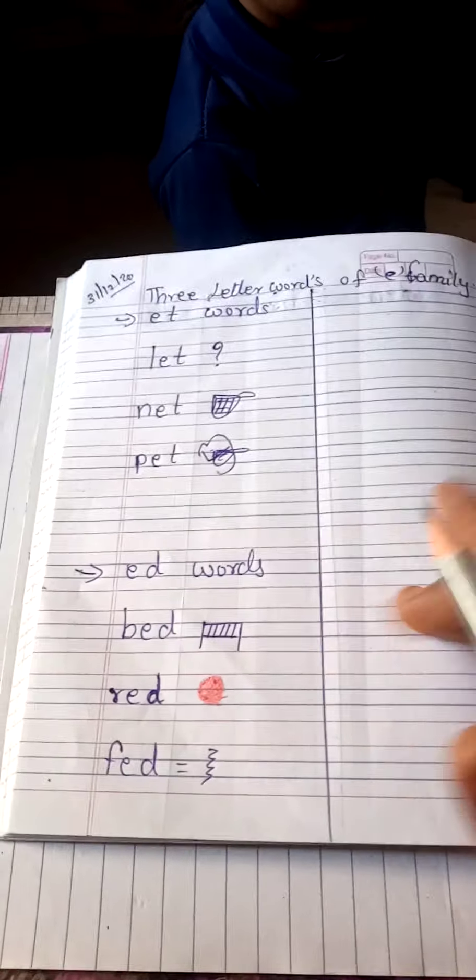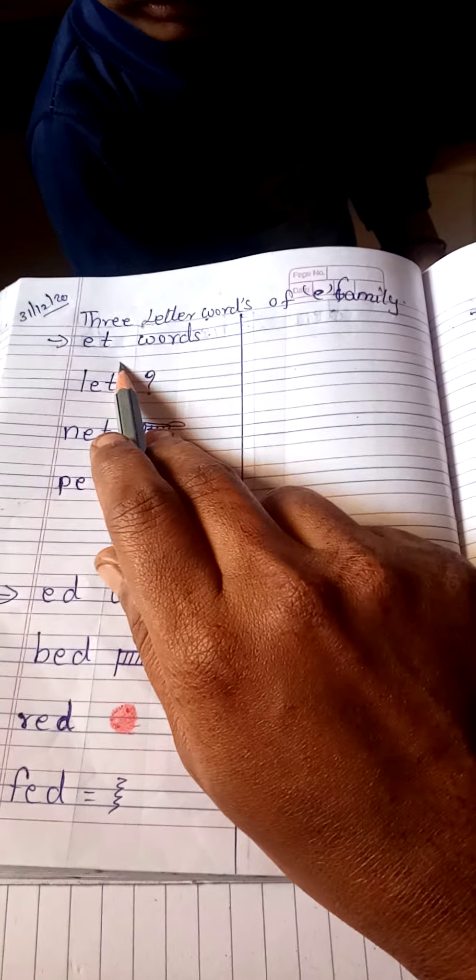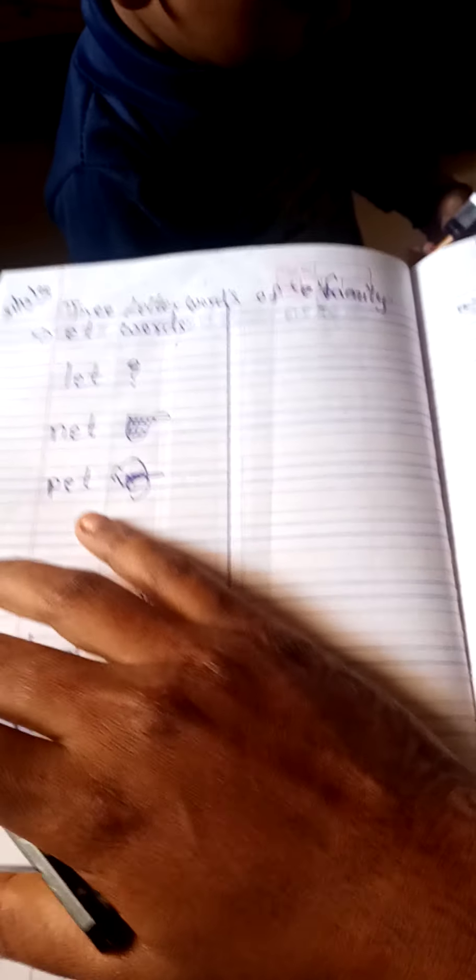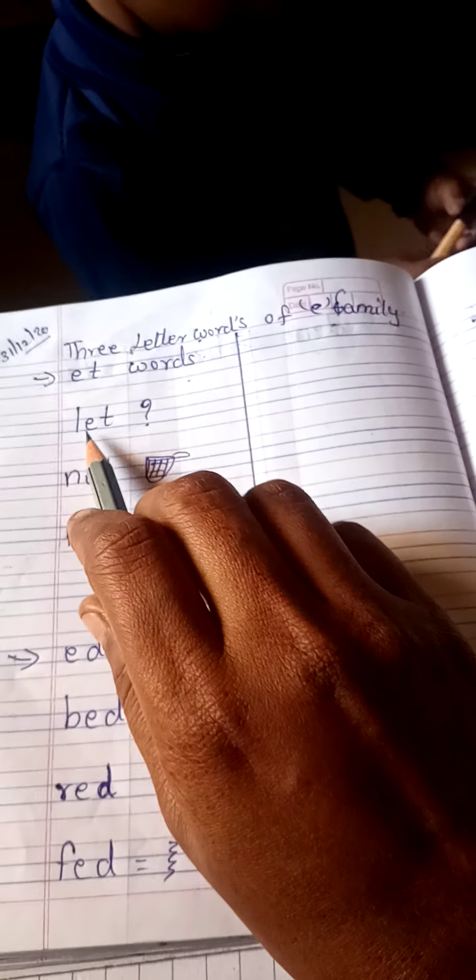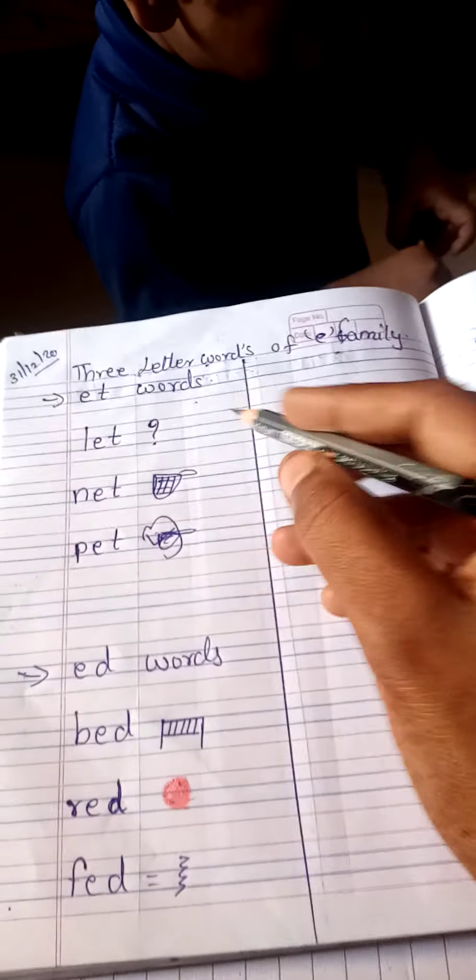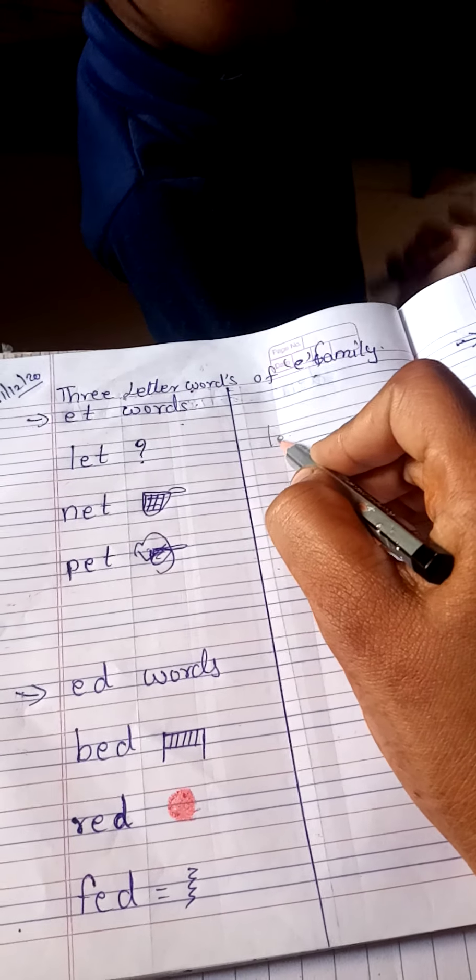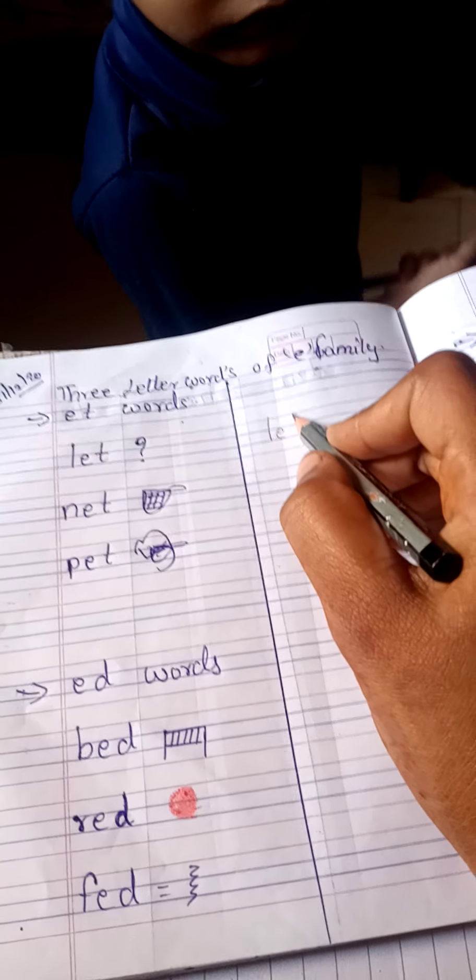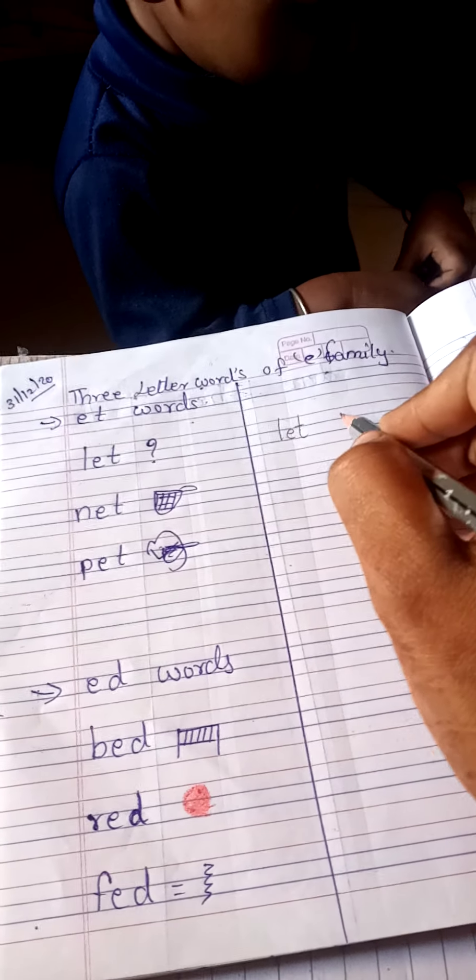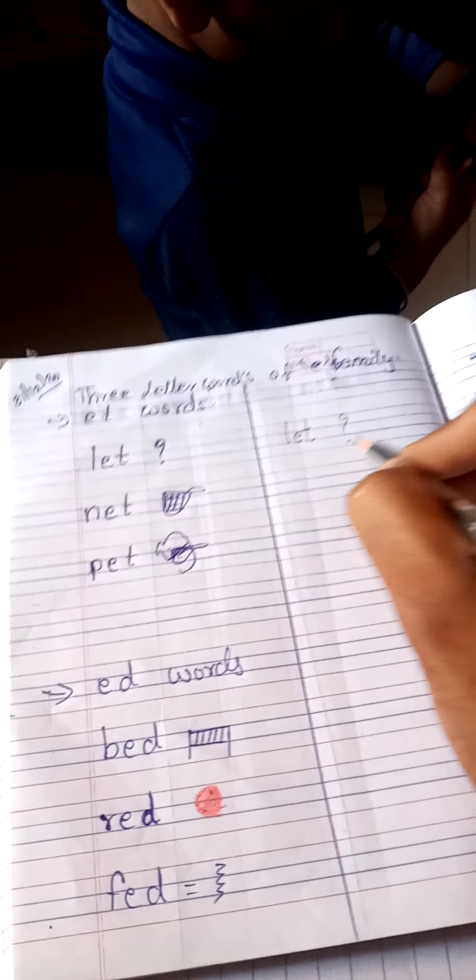Hi kids, today we are going to learn -at words and write them here. So what is this? Let, late. What is meant by late? When you go to school late, or your home to any home, you are going to be late for office or school. So this is the late sign.